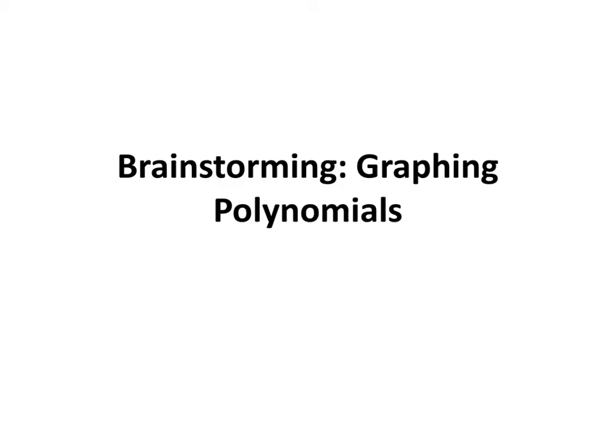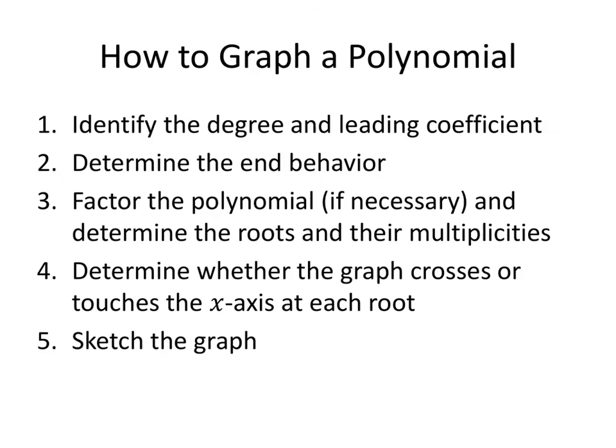In this video, we'll learn about the process for graphing polynomials. Here's the basic idea. First, we want to identify the degree and the leading coefficient of the polynomial. Then we'll use that information to determine the end behavior. Next, we'll want to factor the polynomial if necessary — sometimes the polynomial will be given to us already factored — and then determine the roots and their multiplicities. Using that information, we determine whether the graph crosses or touches the x-axis at each root. Finally, this will be enough information for us to get a rough sketch of the graph.